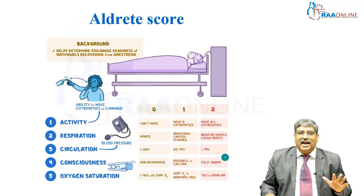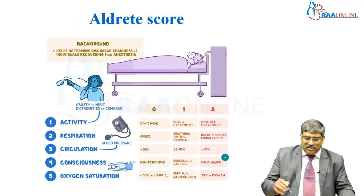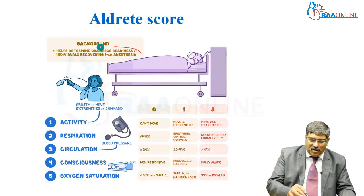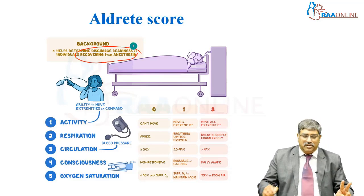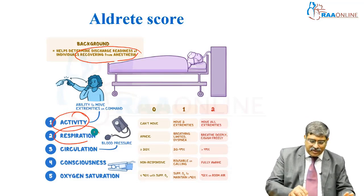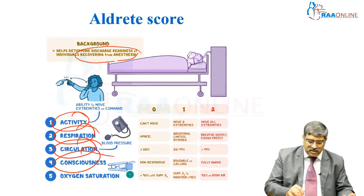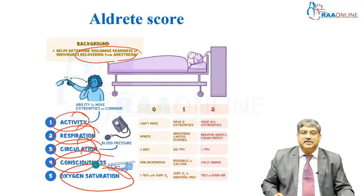Coming to the Aldrete score, this is used for patients recovering from anaesthesia. It looks at five parameters: activity, respiration, circulation, consciousness, and oxygen saturation.